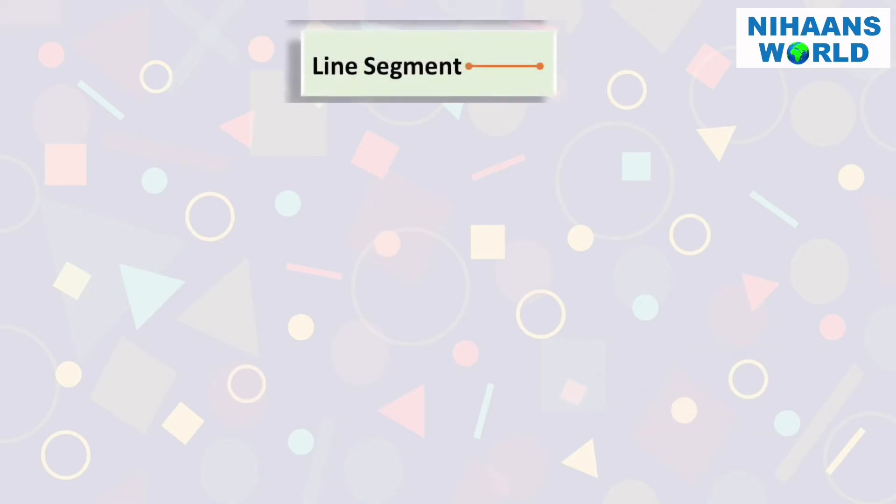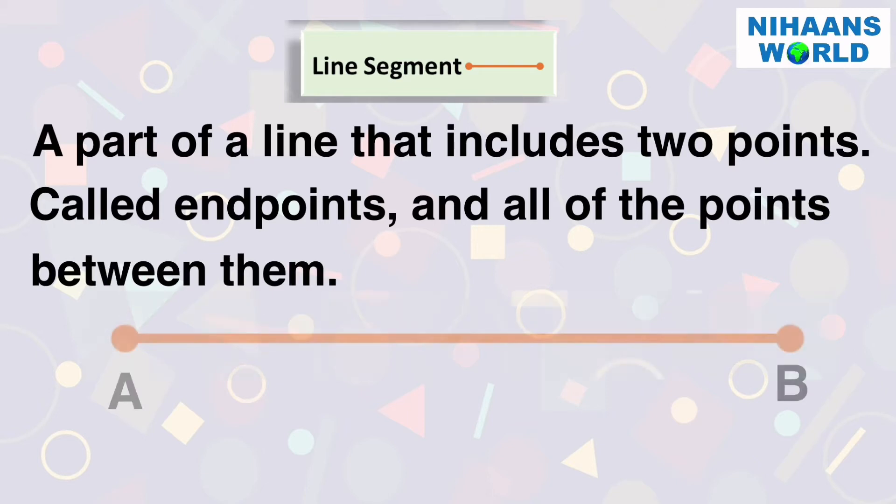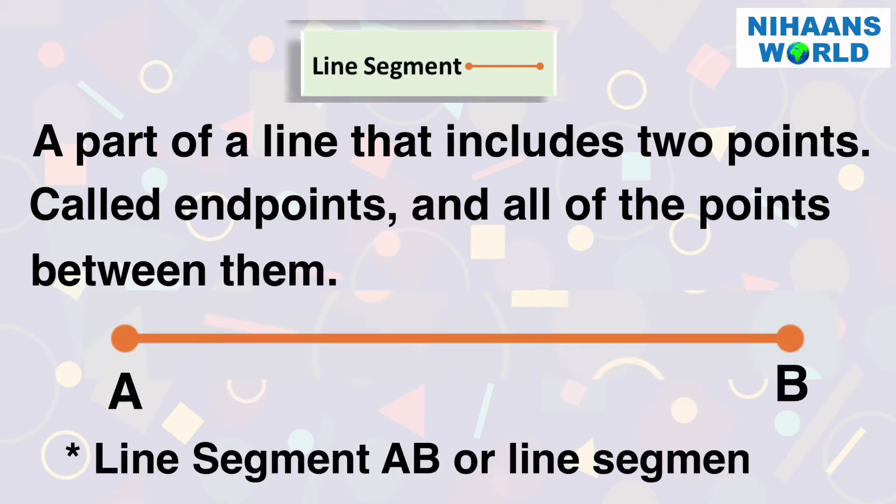What is a line segment? A line segment is a part of a line that includes two points called endpoints and all of the points between them. For example, line segment AB or line segment BA.